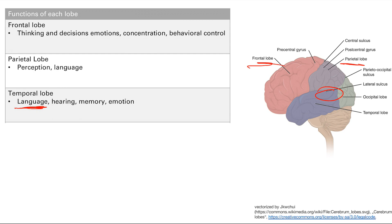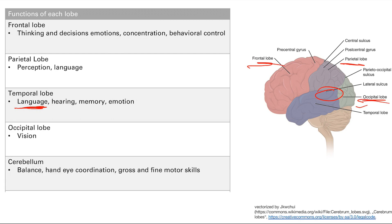Finally, the occipital lobe right here is for vision. Very simple. At least this one's super simple. Occipital lobe for vision. We have the cerebellum here, right here.